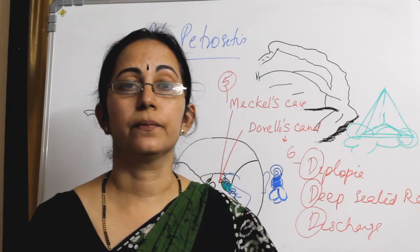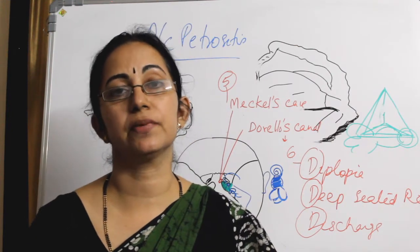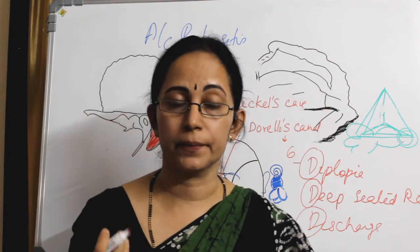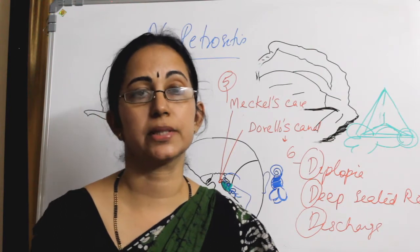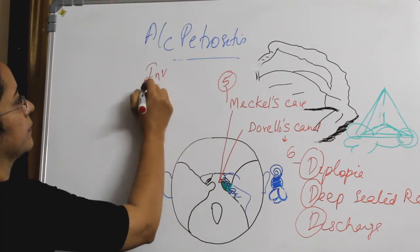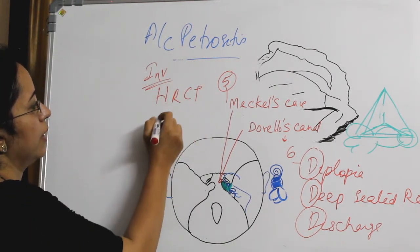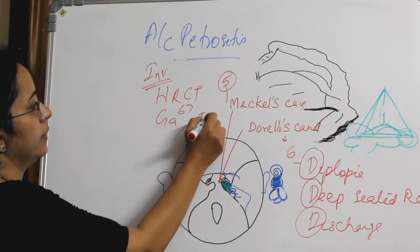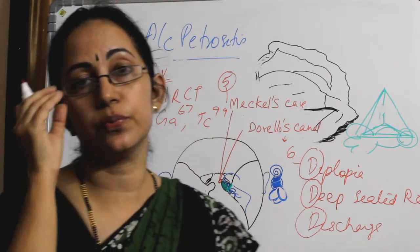The 3 Ds are not a must in all cases. Sometimes the patient will present with low-grade intermittent fever, mild intermittent vertigo, nausea, and vomiting. Investigations include HRCT temporal bone, and gallium-67 and technetium-99 bone scans are also found useful for diagnosing this condition.